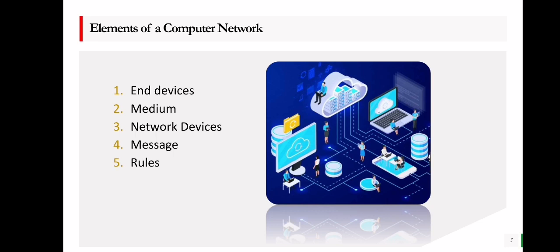The next element is the medium. End devices are connected to each other through a medium in order to send and receive data. A cable or a wireless transceiver may be used to connect two end devices. The next element is network devices — devices that are mounted between end devices to accurately route information or data between them. Switches and routers are popular examples of network devices.